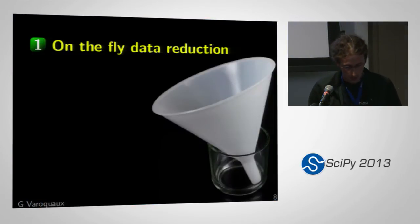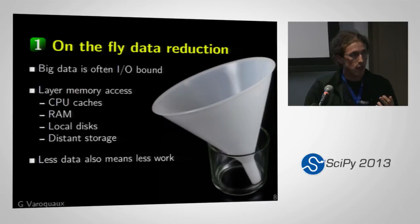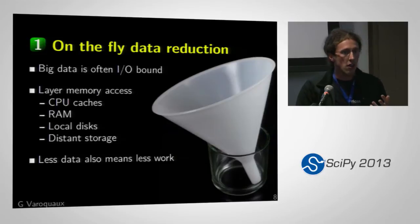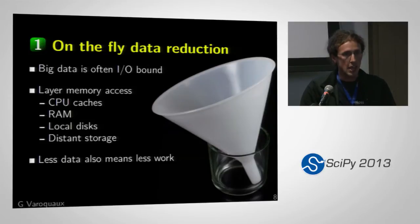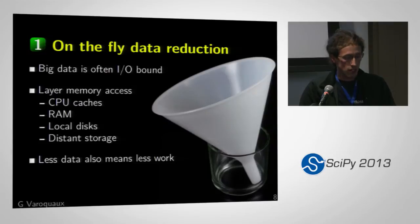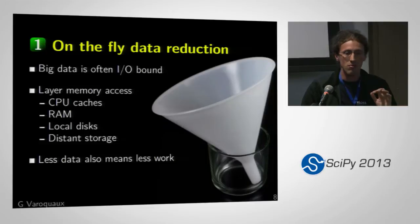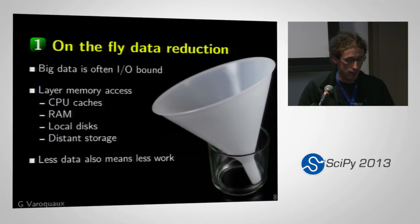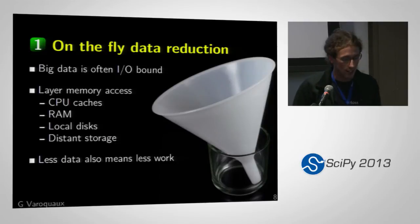On-the-fly data reduction. Why is it important? Because if you've got big-ish data, it's often IO-bound. You need to acknowledge that you have a layered memory access. If you can fit in CPU caches, you're going to be super fast. If you have to access RAM, it's going to be slower. Disk is way slower. And what completely kills you is going to remote storage. We are less and less CPU-bound nowadays and more and more IO-bound. Less data also means less work, so if I have less data, I can go home earlier.